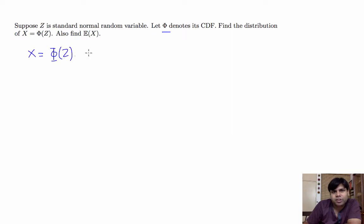Now notice that since Phi is a CDF, no matter what input you provide to Phi, the resulting output will always be between 0 and 1. So this random variable Phi of Z always takes values between 0 and 1. We are asked to find the expectation of X. So in order to find the expectation of X, the first thing we're going to do is find the distribution of X and then we'll find the expectation of X.